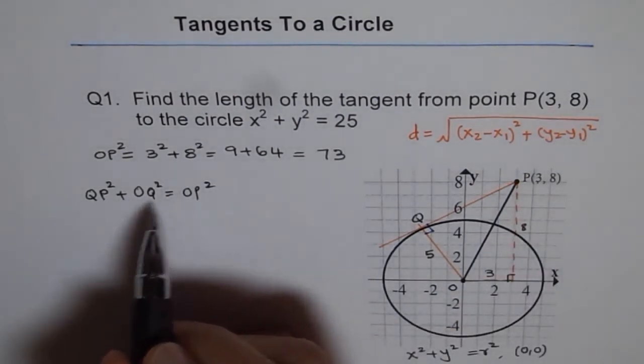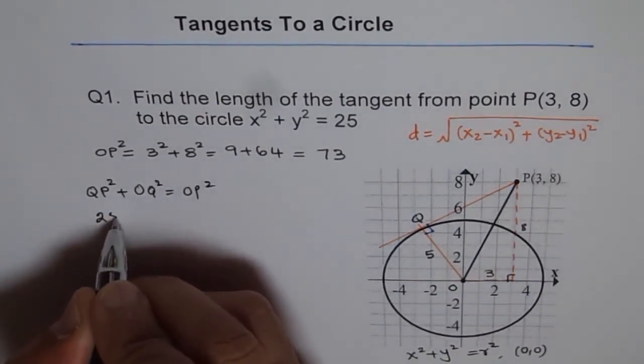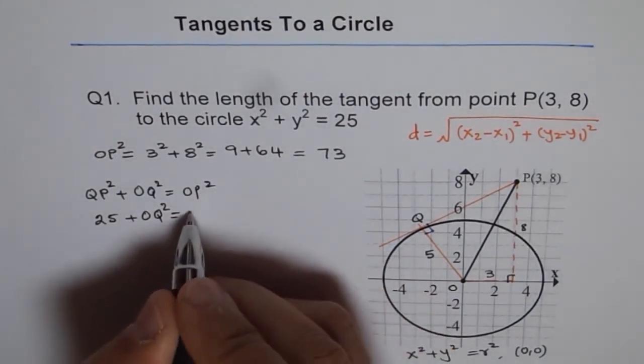So we know what OP is, we know what QP is. QP is 5, so 5 square is 25, plus OQ square equals to OP square is 73.